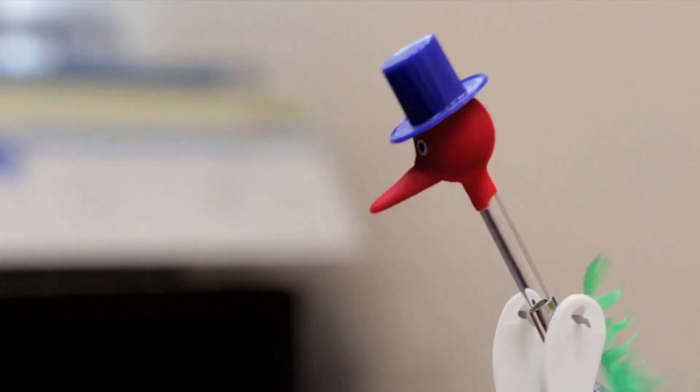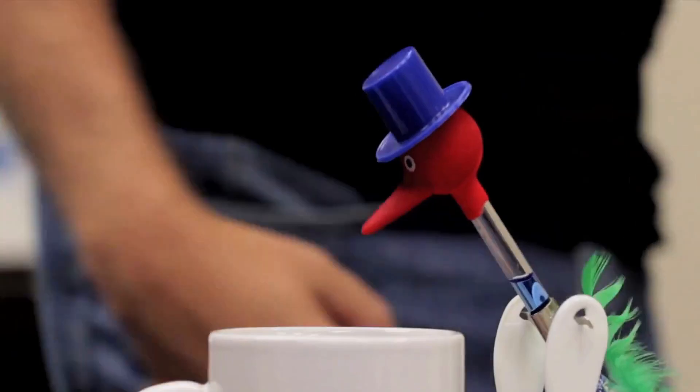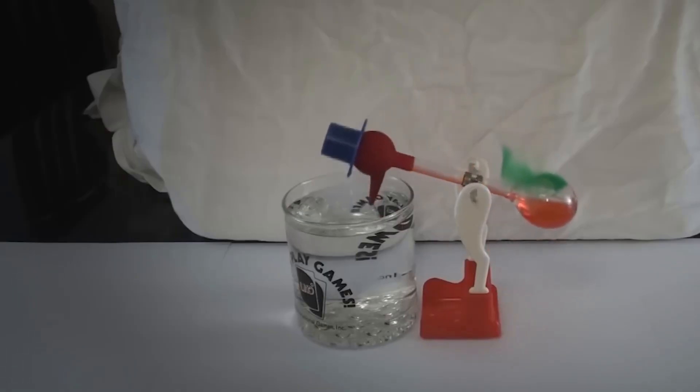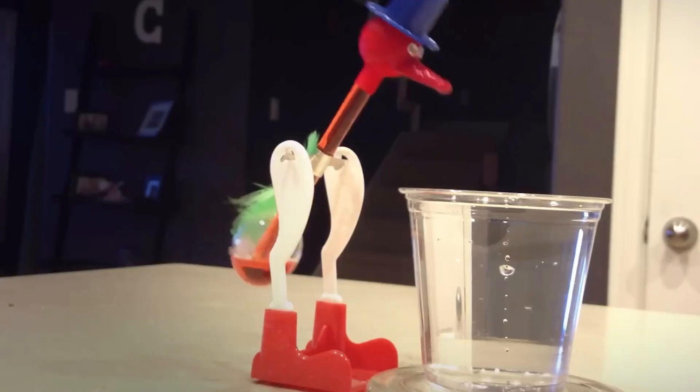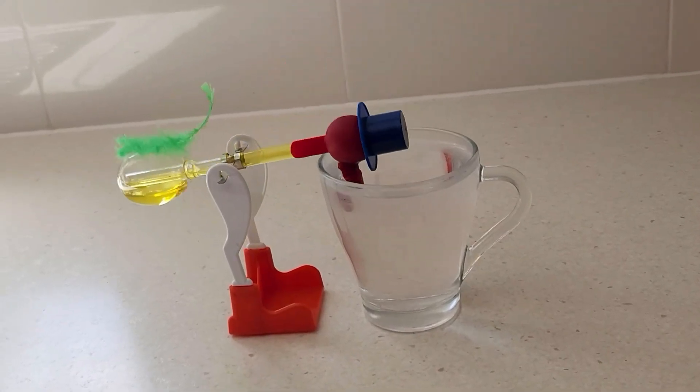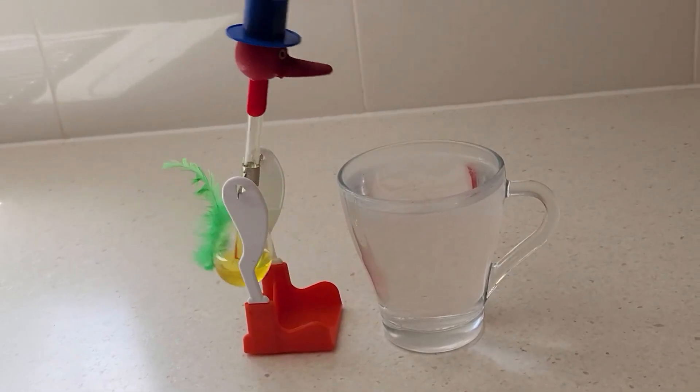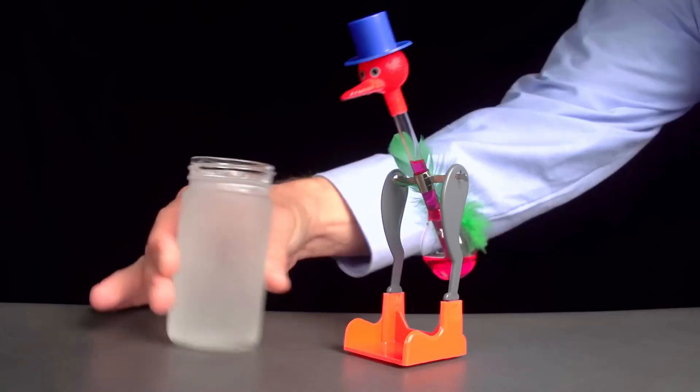This temperature difference creates a pressure imbalance between the head and the body, causing the liquid to rise up the tube into the head. This makes the bird top-heavy, so it tips over for a drink. As it tips, the liquid flows back to the body, and the cycle repeats as long as its head is wet.